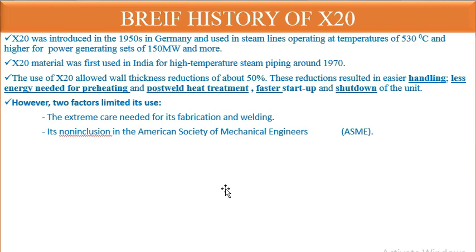However, two factors limited the use of X20. First, extreme care was needed for its fabrication and welding — parameters like PWHT, preheat, amperage, and voltage all required very careful handling. Second, X20 had non-inclusion in the American Society of Mechanical Engineers (ASME) codes, such as Section 9, which was a significant limitation.